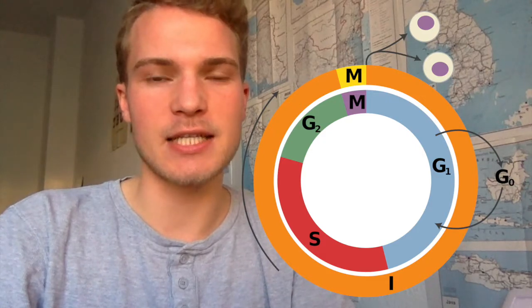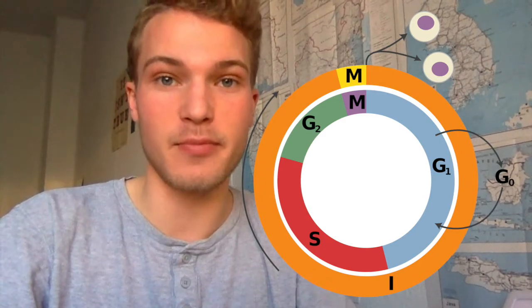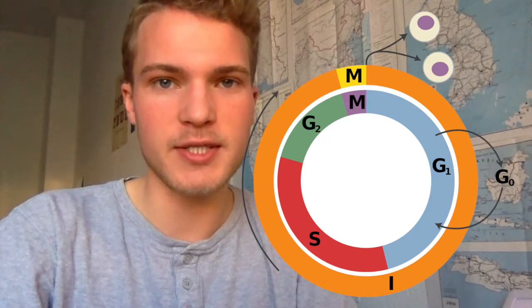The next stage is S phase, and S stands for synthesis. What are we synthesizing now? We're going to look into the nucleus — the center of the cell — where the genetic material, DNA (deoxyribonucleic acid), is stored. Now we are replicating the DNA. We are making an entire new set of DNA, because later on we're going to divide the cell, and the two daughter cells both need their own sets of genetic material. So in S phase, we are replicating DNA — we'll have an entire video just on that process.